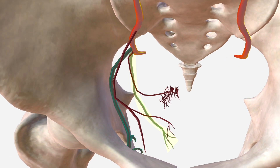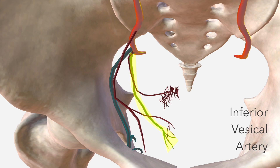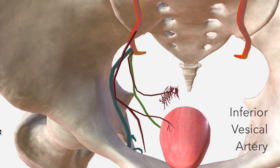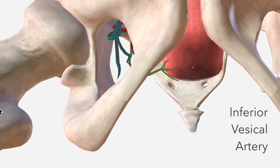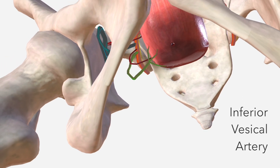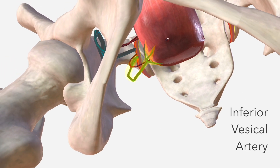Here we have the inferior vesicle artery, which some anatomical texts suggest is only present in males and is replaced by the vaginal artery in females. It descends toward the bladder, and in men supplies the ductus deferens, the seminal vesicles, and the prostate gland. That's the inferior vesicle artery just there.